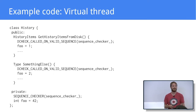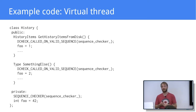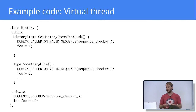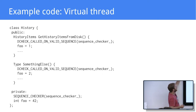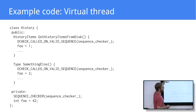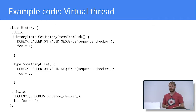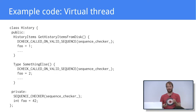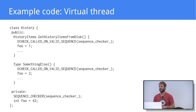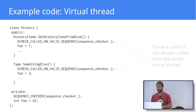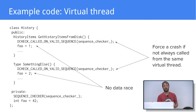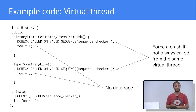This is a class that requires all its methods to be called on the same virtual thread. It encodes that requirement by using a sequence checker. In all methods, you can see that the DCHECK_CALLED_ON_VALID_SEQUENCE macro is used. What that does is at runtime, if one of the methods is called on a different virtual thread than previous calls, Chrome will crash and you will know you've done something incorrectly. So there are no data races for the accesses to the foo member of this class.